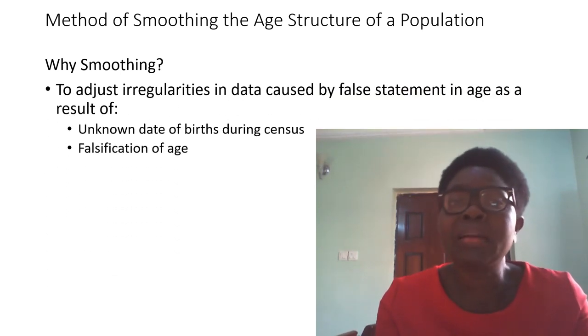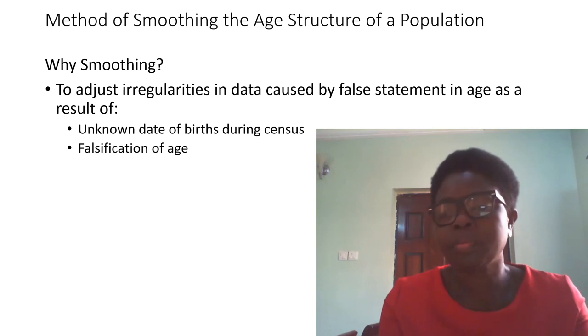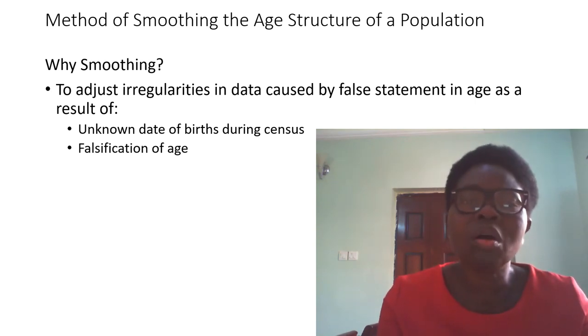First, to adjust irregularities in data caused by false statements in age. One reason is unknown dates of birth during census. When taking census, there are some persons that do not know their date of birth. They don't know when they were born, they just assume and give the dates.